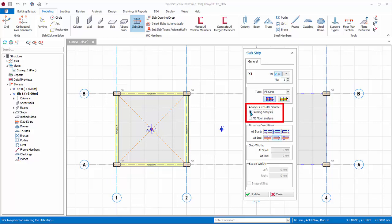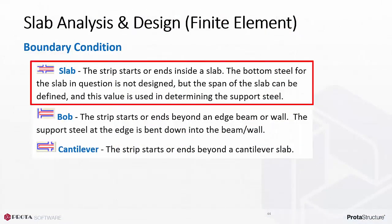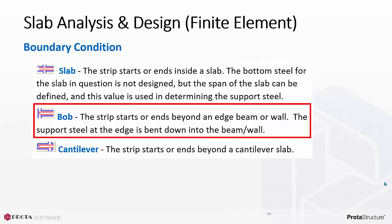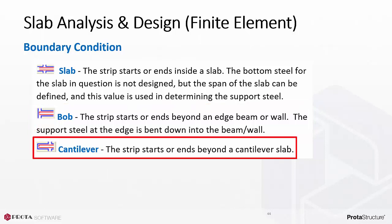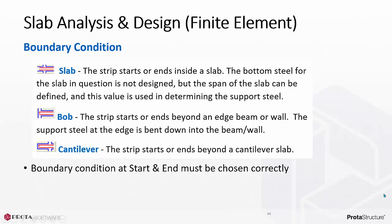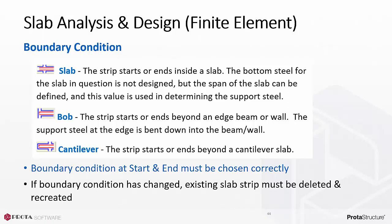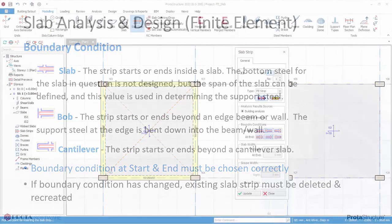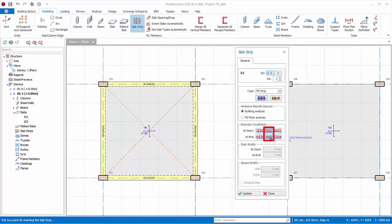Under Analysis Result Source, choose Building Analysis. This means we must choose to mesh the floor slabs during building analysis. FE Floor Analysis is the other option, which only considers one floor at a time. For boundary conditions, there are three options: Slab — the strip starts and ends inside a slab and the user must specify the length of the slab where the strip ends; B.O.B. (Bending of Bar) — the strip starts and ends beyond an edge beam or wall and the support steel at the end will bend down; and Cantilever — the strip starts or ends beyond a cantilever slab. Boundary conditions must be chosen correctly, otherwise slab design will be erroneous. Choose Bending of Bar for both start and end, since the tabletop model starts and ends with a beam.